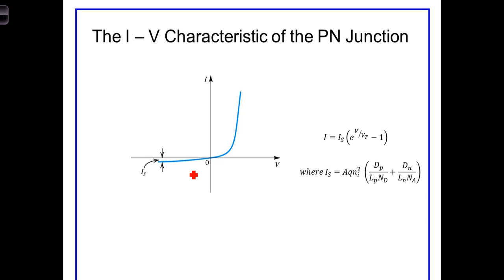It's frequently referred to as the saturation current. It is typically on the order of 10 to the minus 18th to 10 to the minus 12th amps. Notice also the exponential nature of the curve for positive values of the voltage.